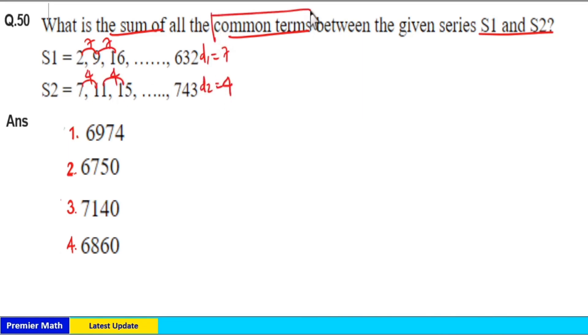Then difference between common terms from series S1 and S2 should be LCM of 7 and 4. LCM of 7 and 4 is 28. So common difference between these common terms is 28.